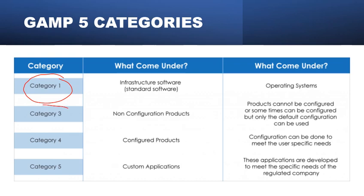Category 3 covers software that is non-configurable — that is, software which cannot be configured to suit business processes. These are COTS, or commercial off-the-shelf, software. For example, from the QC laboratory: TMO software, VisionCAD software, TOC Control L software, etc.